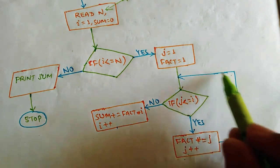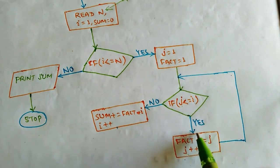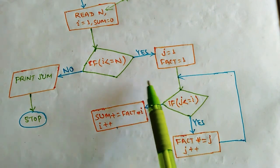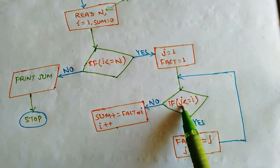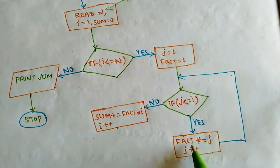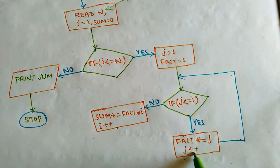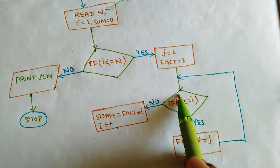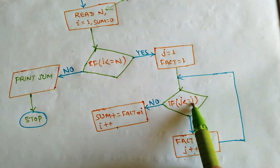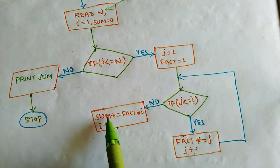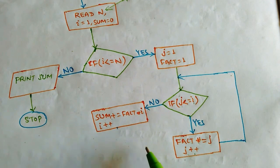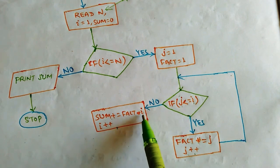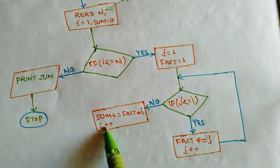For example, assume n is 4. When i is 1: condition is true, j is 1, fact is 1. Since j (1) is less than or equal to i (1), fact becomes fact times j = 1 times 1 = 1. Then j increments to 2. Now we check again: j is 2, which is not less than or equal to i (1), so the inner loop exits. Then sum = sum + fact times i = 0 + 1 factorial times 1 = 1. After that, i is incremented.